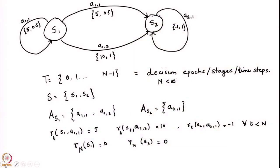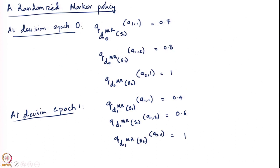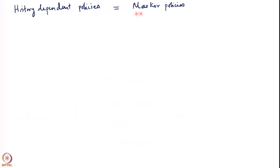In the previous lecture we saw that because we were looking at a problem where we had a Markov decision process on two states, and because of the nature of the problem, the actions available at each state and the allowed transitions, the set of Markov policies is actually the same as the set of history-dependent policies.